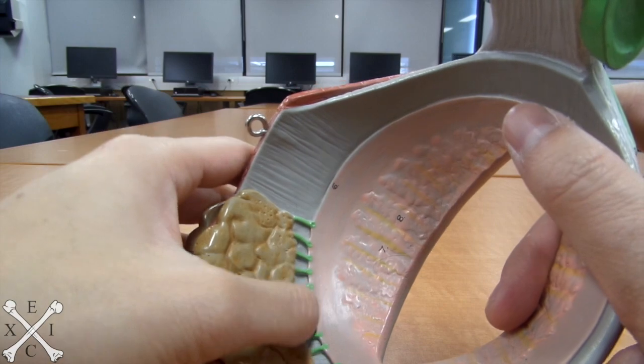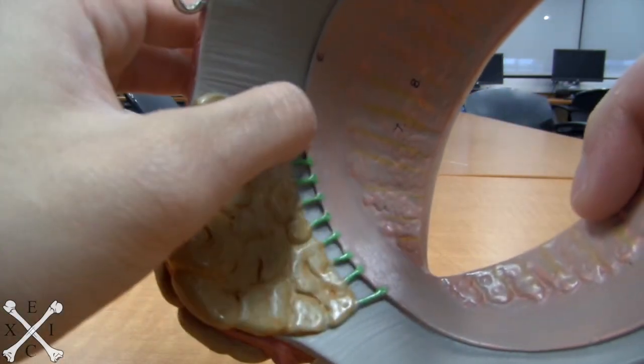Behind here, you'll see these greens right here. These are called your lacrimal duct.